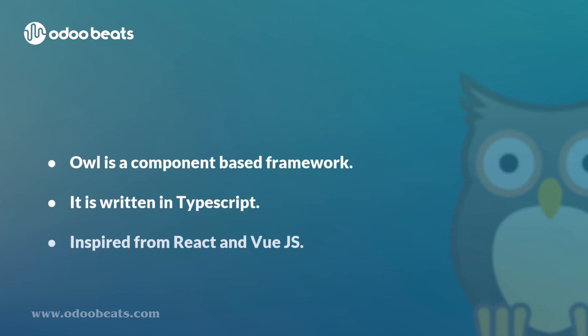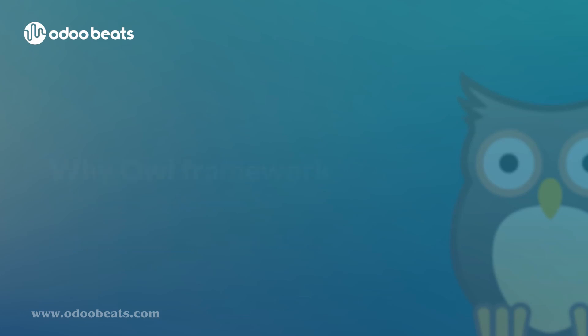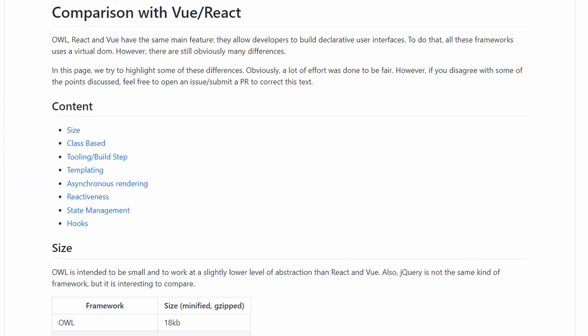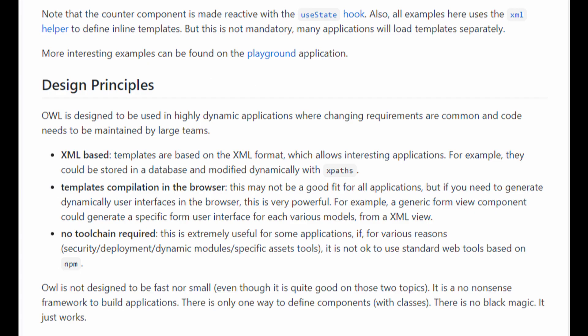It was introduced by Odoo to manage its web client user interface. It is written in TypeScript, which means you will be able to use object-oriented programming concepts. Odoo took some best ideas from both React and Vue.js, and uses QWeb templates as its view. Its code can be structured with ES6 classes.